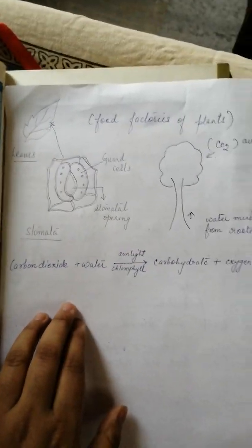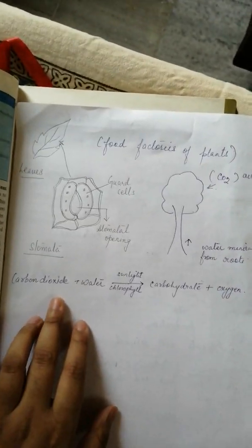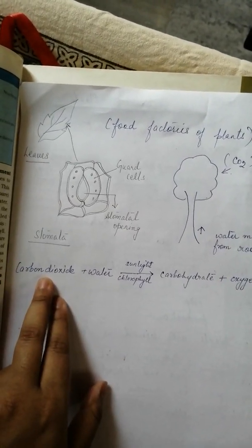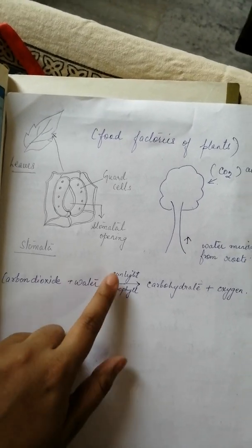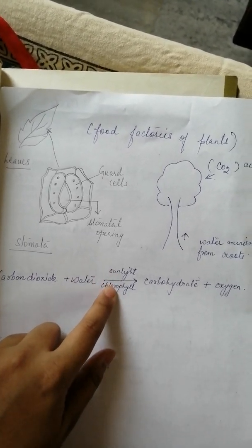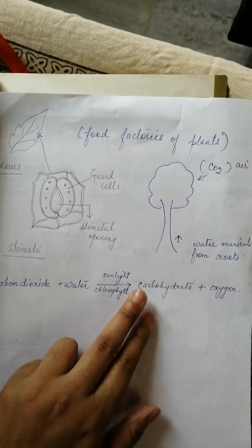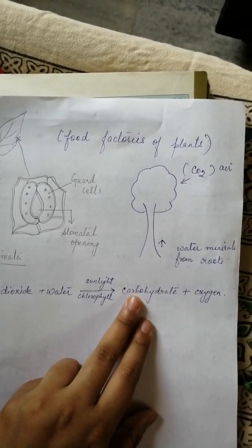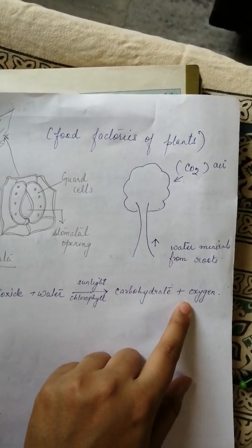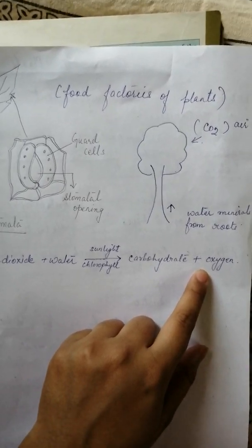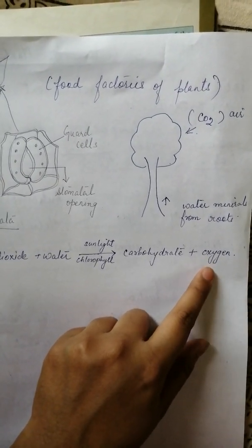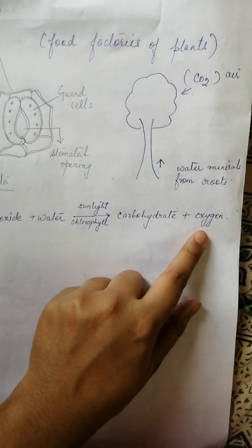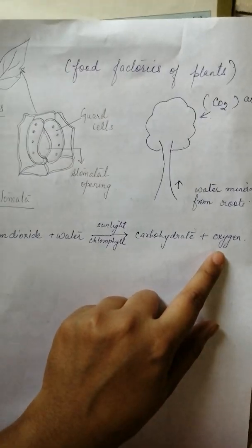The process of photosynthesis can be summed up in a simple equation: carbon dioxide and water, in the presence of sunlight and chlorophyll, produce carbohydrates — that is, starch or food — with the liberation of oxygen. This oxygen is then taken up by all living organisms, including humans, for their survival.